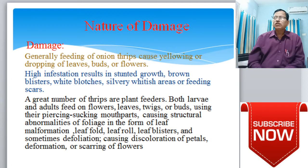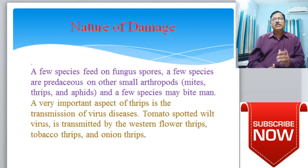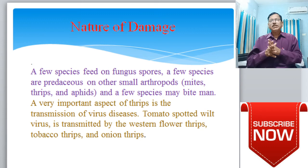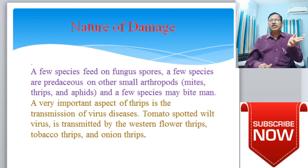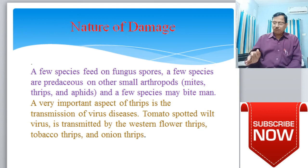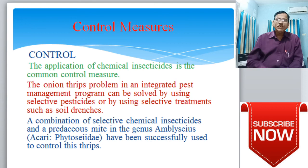Damage to onion leaves reduces photosynthesis, stunting plant growth and reducing onion yield. A few species also feed on fungal spores, and some are predaceous on other small arthropods. A very important aspect of thrips is the transmission of virus diseases — Tomato Spotted Wilt Virus is transmitted by western flower thrips, tobacco thrips, and onion thrips, making thrips an important insect vector.